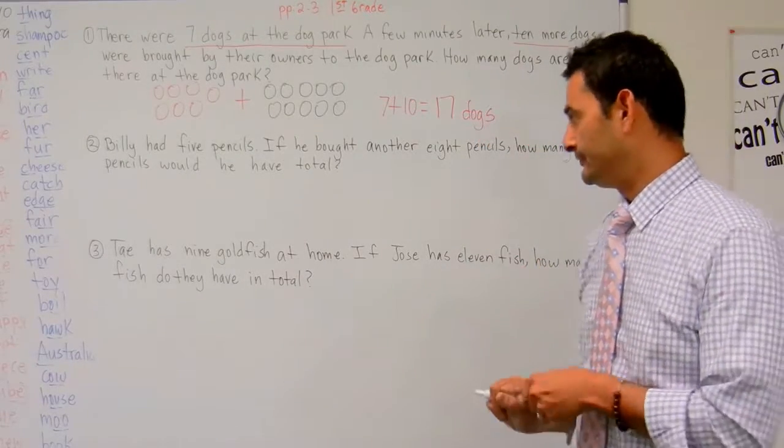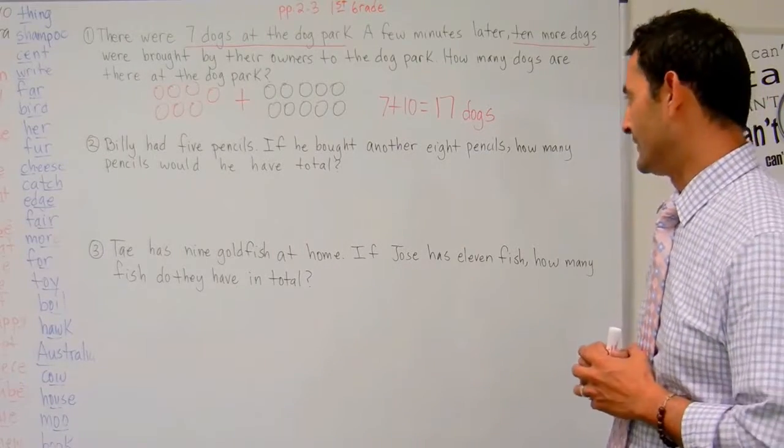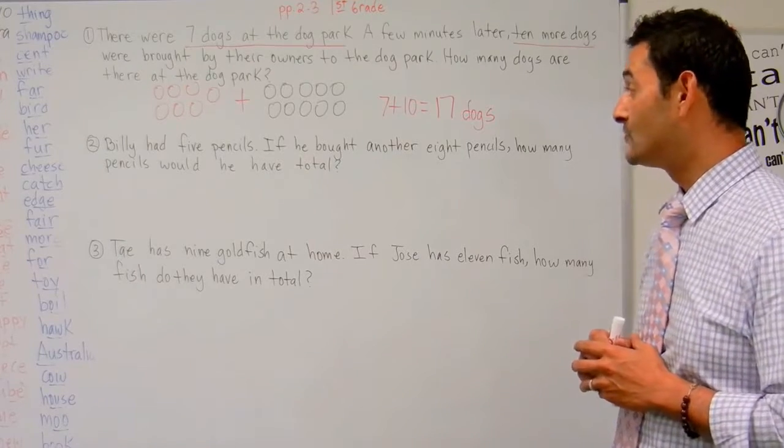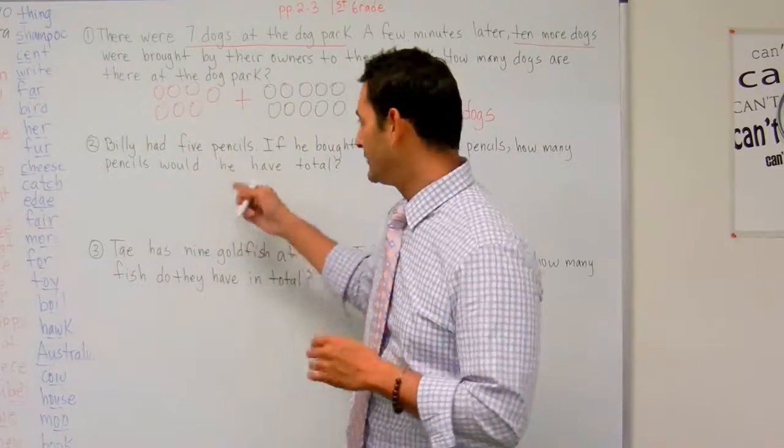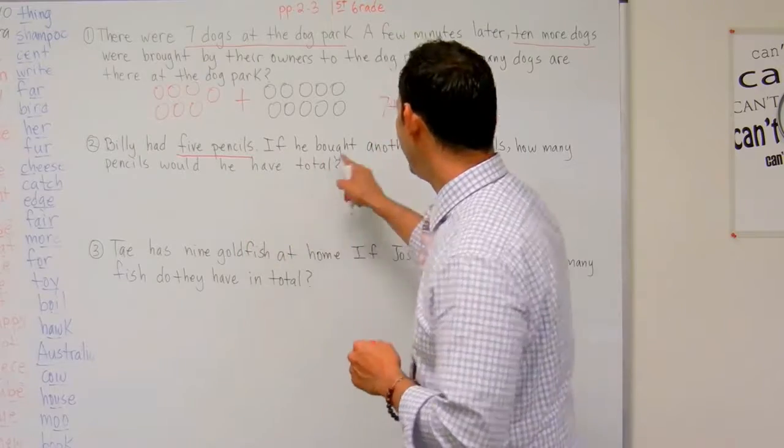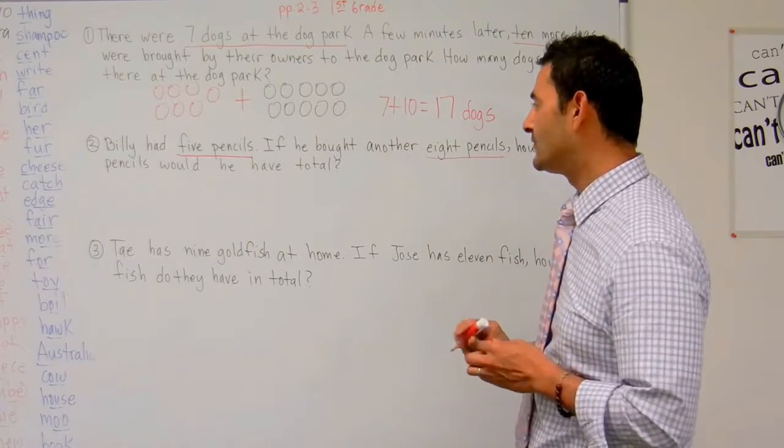Now let's take a look at number 2. Number 2 reads, Billy had 5 pencils. If he bought another 8 pencils, how many pencils would he have in total? So let's see. Let's go ahead and go back to the question and read it. Billy had 5 pencils. If he bought another 8 pencils, how many pencils would he have total?